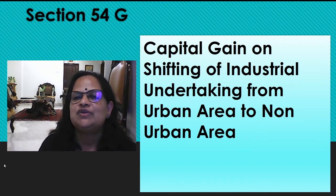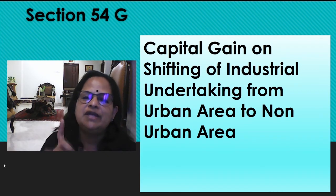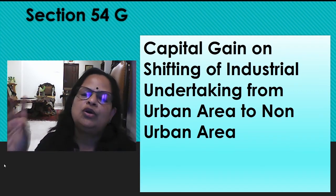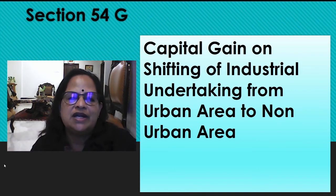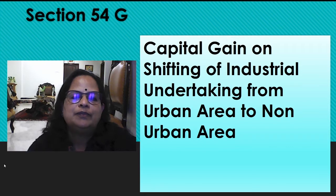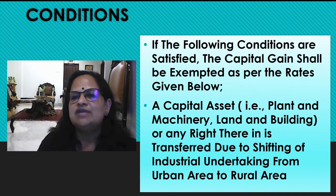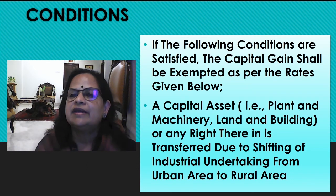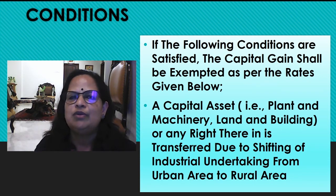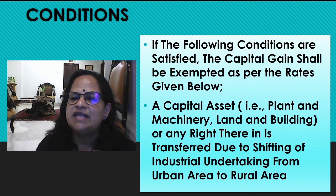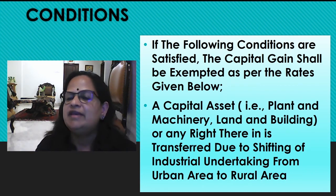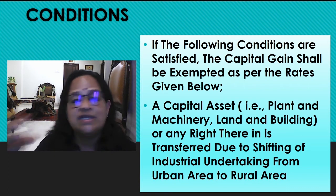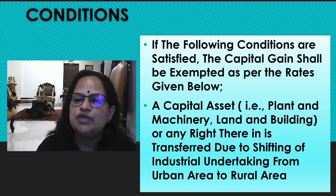First one is 54G: capital gain on shifting of an industrial undertaking from urban area to non-urban area. That meaning it's not urban area — either semi-rural or rural area they are shifting. The capital asset is plant and machinery or land and building or any right therein, even if they are taking a lease. That is the right in a property or land and building transferred due to shifting of industrial undertaking from urban area to rural area.